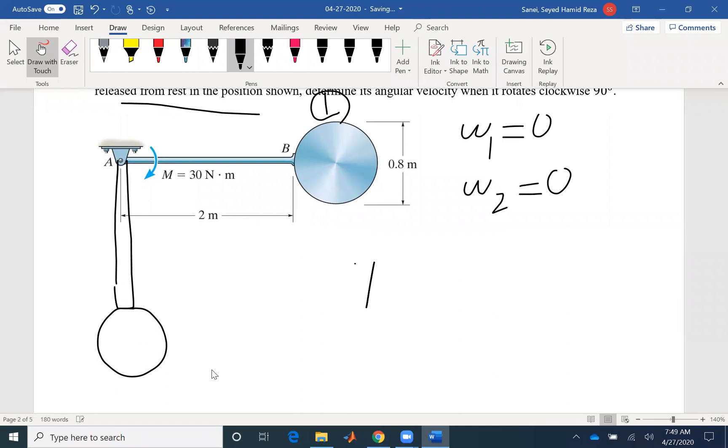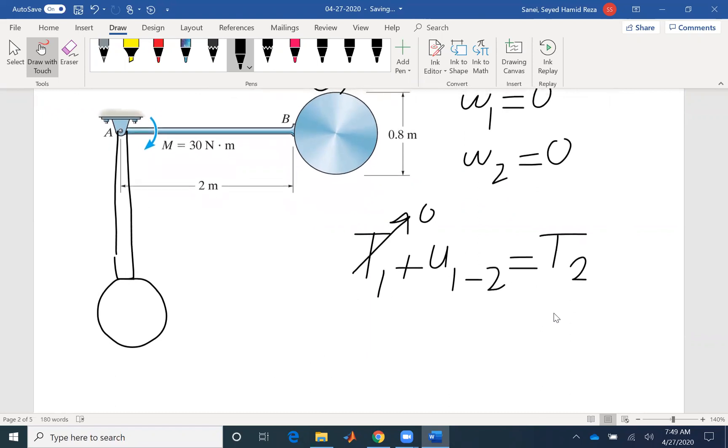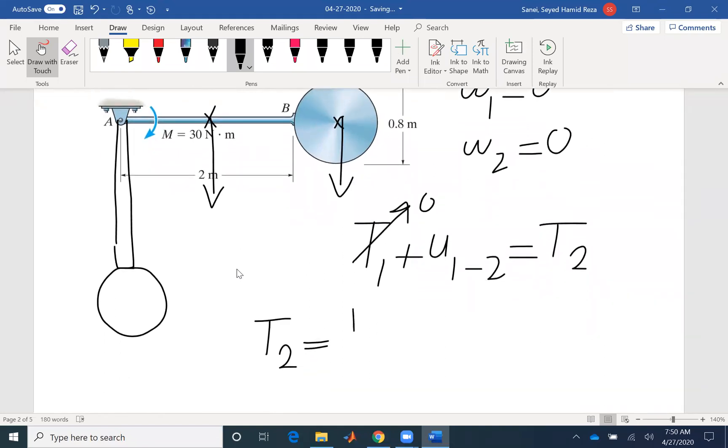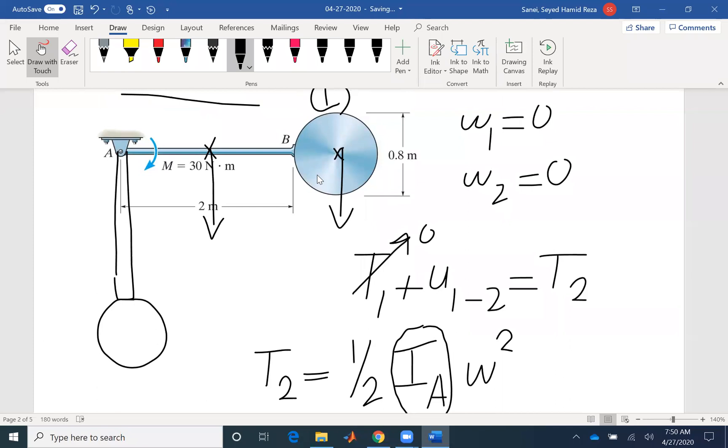If you write our kinetic energy work equation, the initial kinetic energy is zero. We need to find the work that is done on the system and final kinetic energy. For final kinetic energy we have multiple options. We can write it about the center of gravity of each rigid body and include the velocity of the center of gravity, or we could write our moment of inertia about point A which is a fixed point. Therefore we do not need to include the linear velocity components of each rigid body. The second approach would be easier. So I'm going to write half of Ia omega squared. And Ia is the overall moment of inertia of my system both for the disk and rod.